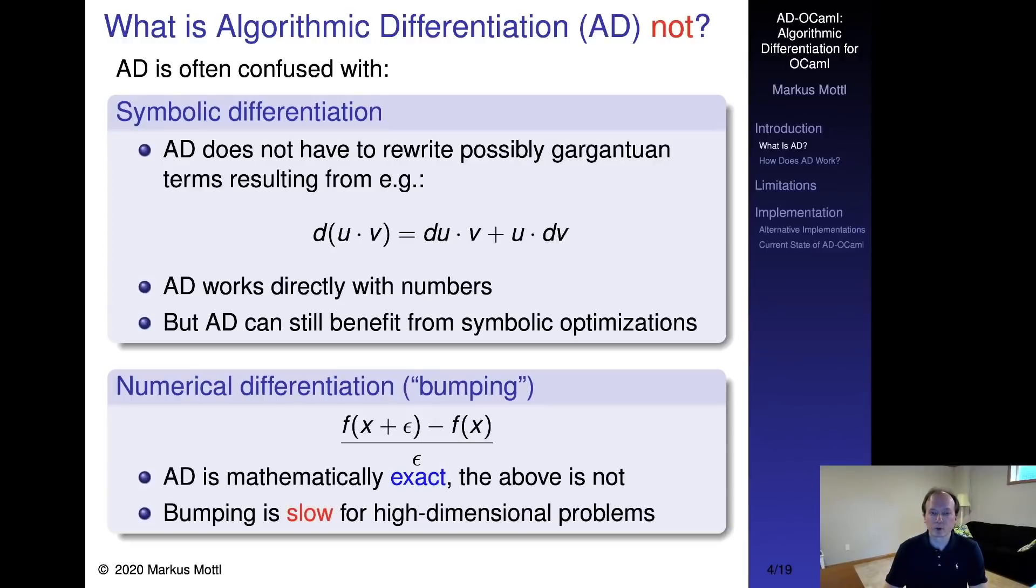AD should not be confused with other methods. Unlike symbolic differentiation, which can lead to intractably large terms, AD should rather be seen as an exact numerical method. But we can still combine it with symbolic program optimizations when convenient. Unlike numerical differentiation, sometimes called bumping, it does not introduce approximations, which in practice can lead to substantially incorrect results.